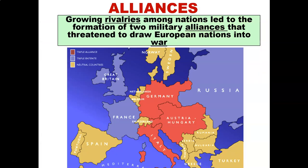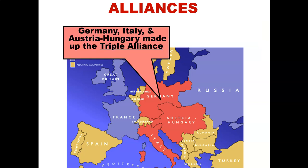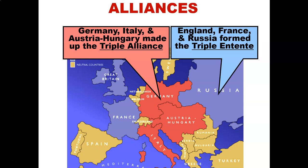The second cause of World War One is alliances. The alliance system that evolved in Europe — growing rivalries among nations — led to the formation of two military alliances that threatened to draw European nations into war, and it actually did. Germany, Italy, and Austria-Hungary made up the Triple Alliance, shown in red on the map. England, France, and Russia formed what became known as the Triple Entente, shown in purple on the map.